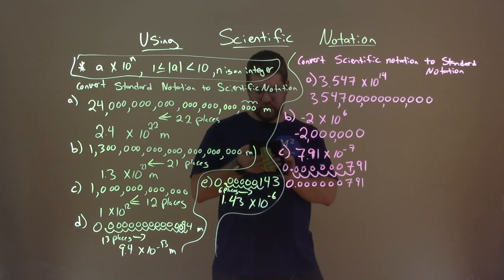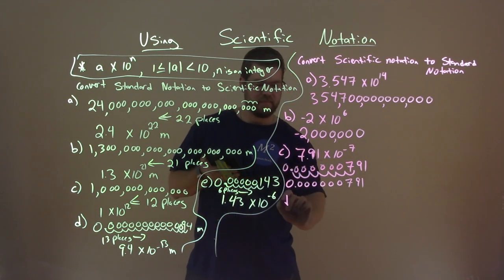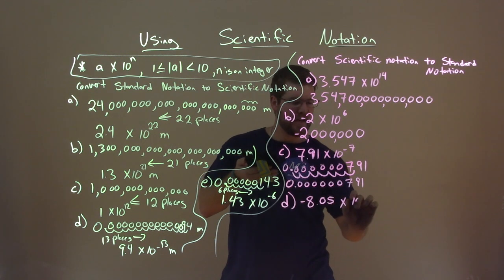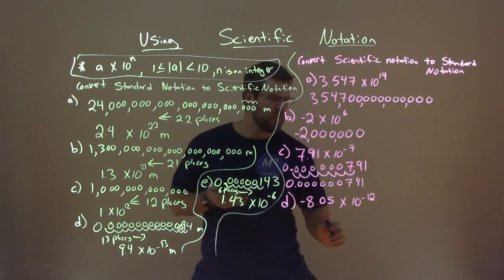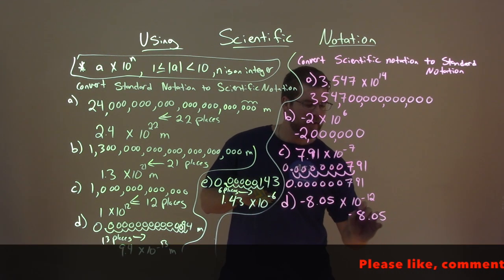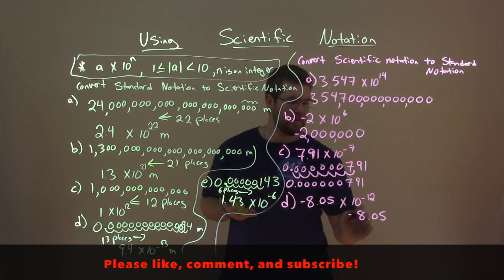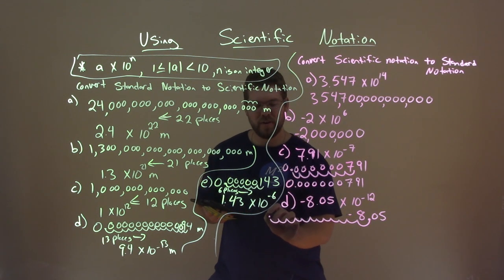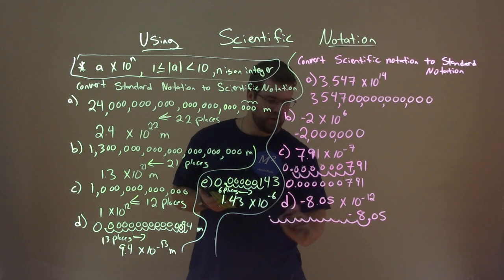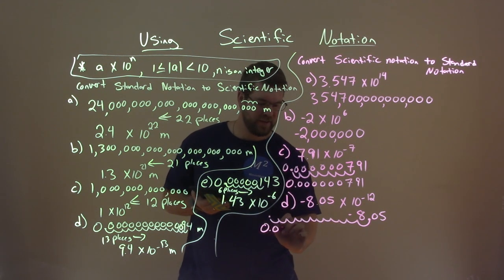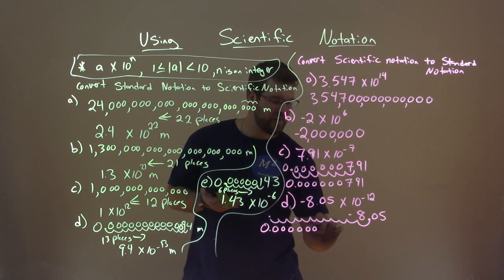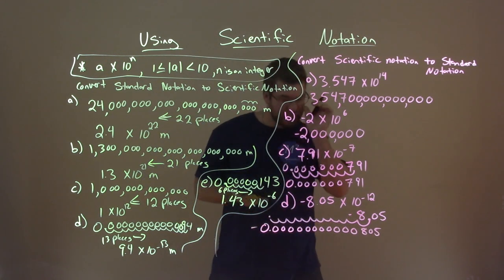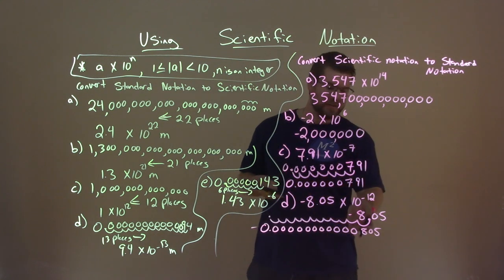Our last one, D, is negative 8.05 times 10 to the negative 12th power. Let's do the same thing — rewrite negative 8.05. Negative 12 means we have 12 spaces to the left: 1, 2, 3, 4, 5, 6, 7, 8, 9, 10, 11, 12. There's your decimal. So let's fill it in below: negative 0.00000000000805. Don't forget that it's negative.